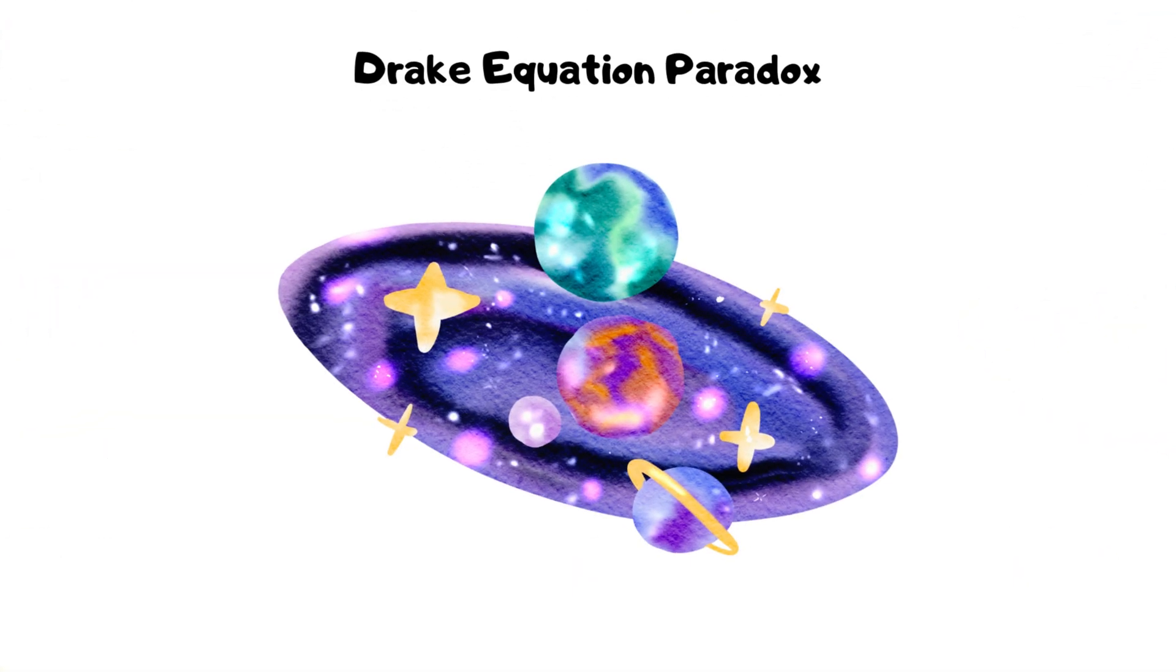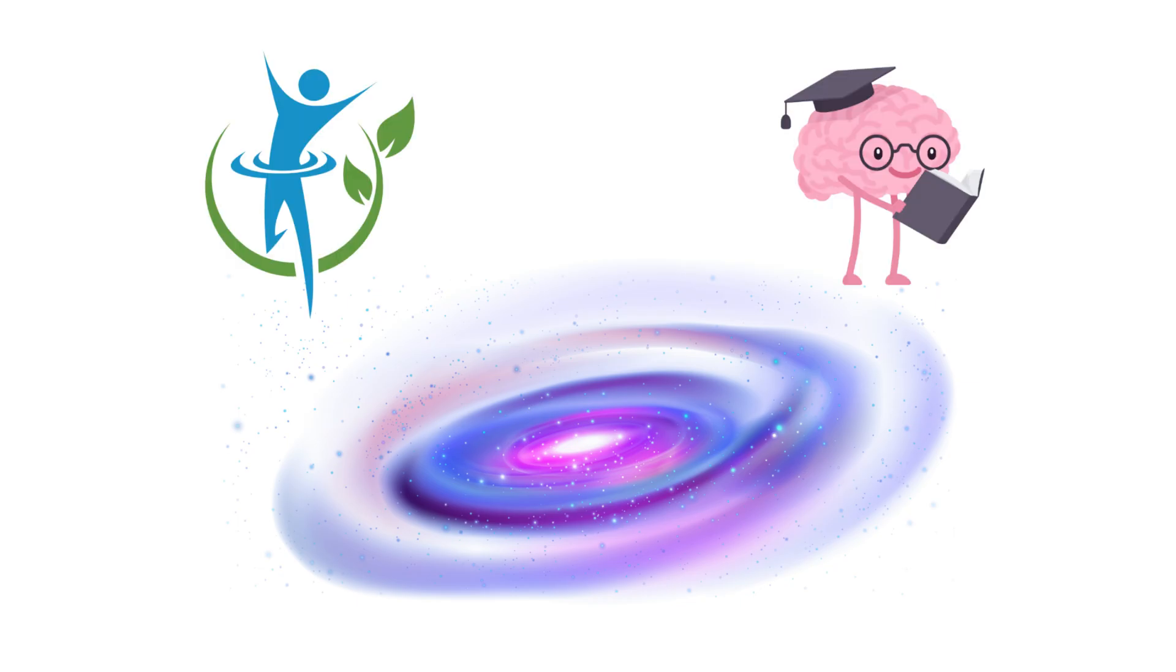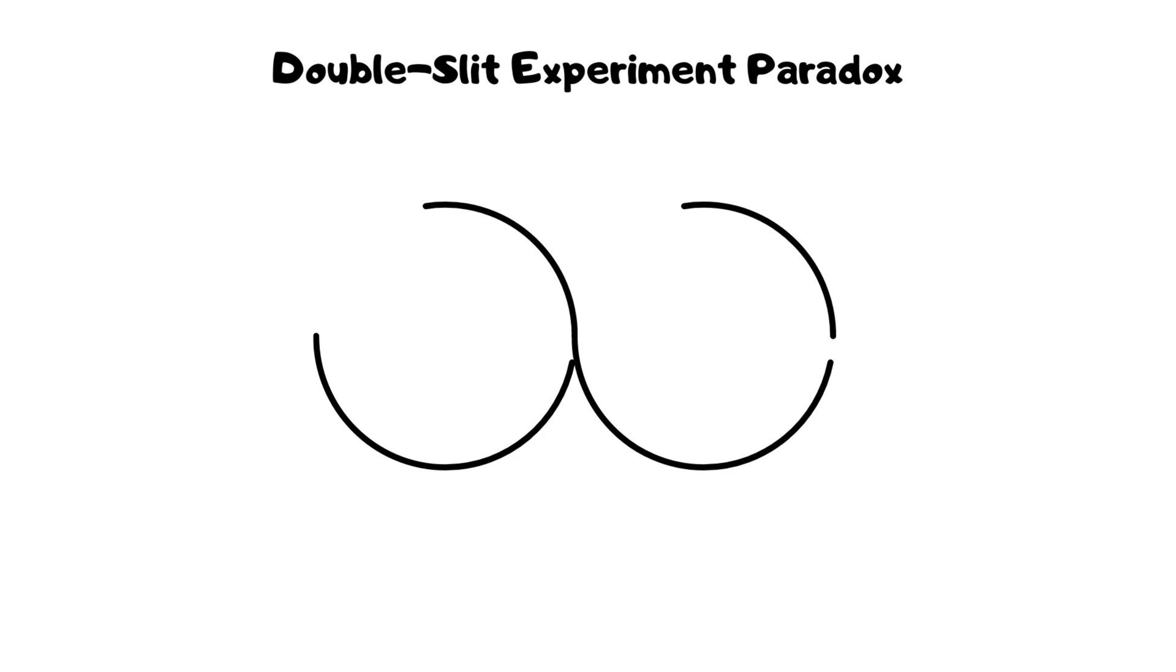Drake equation paradox. Despite high probabilities for extraterrestrial civilizations estimated by the Drake equation, we have found no evidence, questioning our understanding of life and intelligence in the universe.